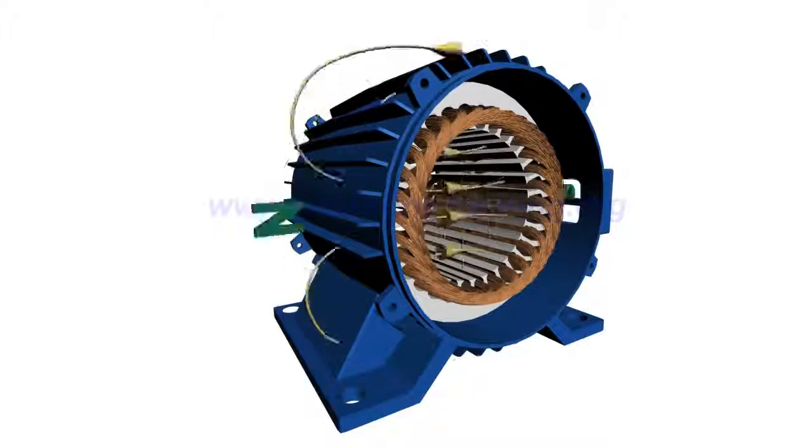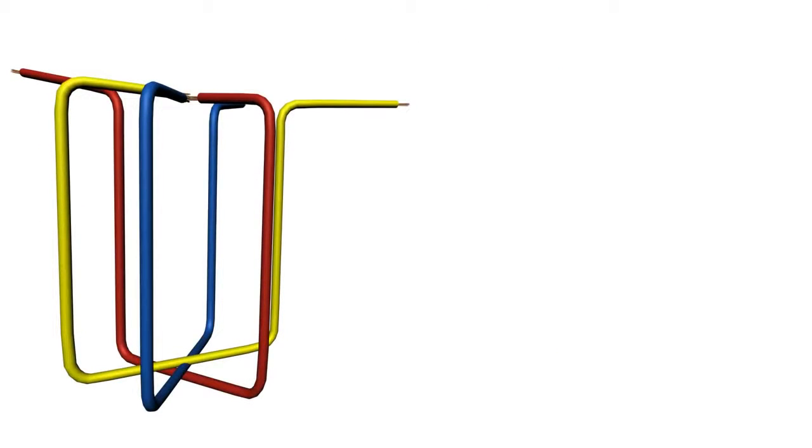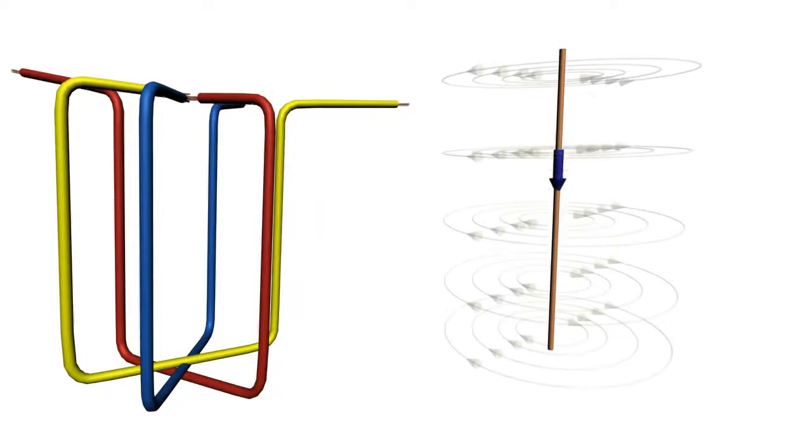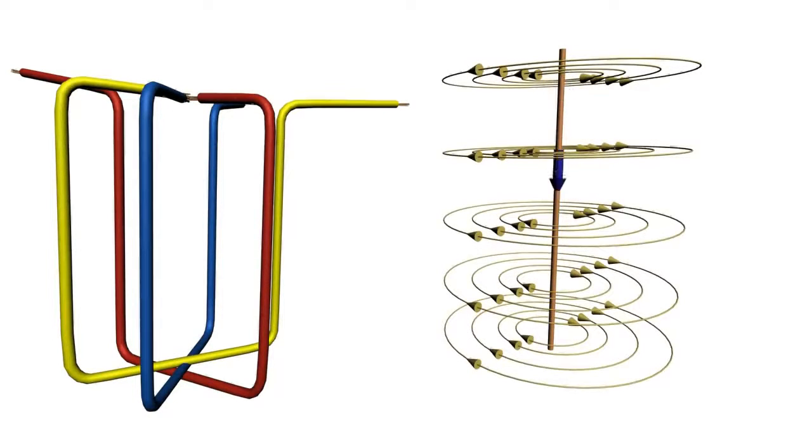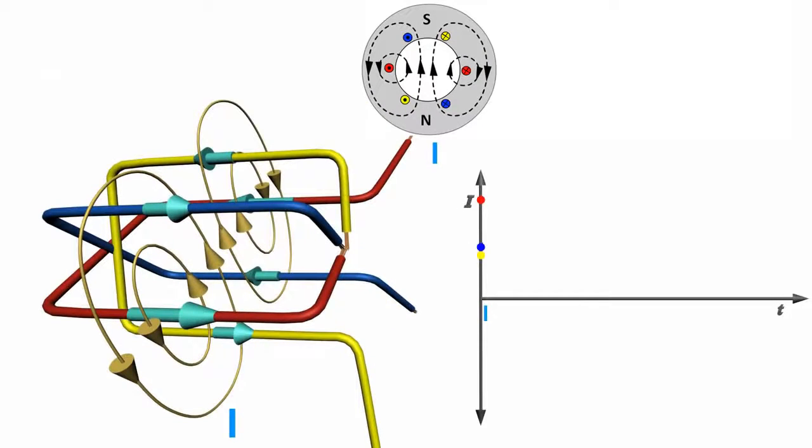It produces a rotating magnetic field. To understand this phenomenon much better, consider a simplified three-phase winding with just three coils. A wire carrying current produces magnetic field around it. Now, for this special arrangement, magnetic field produced by three-phase AC current will be as shown, at a particular instant.